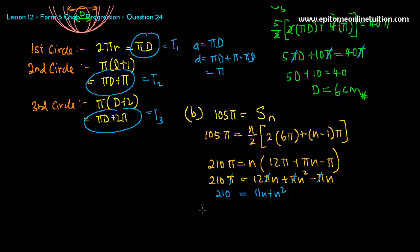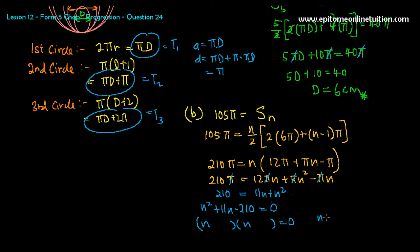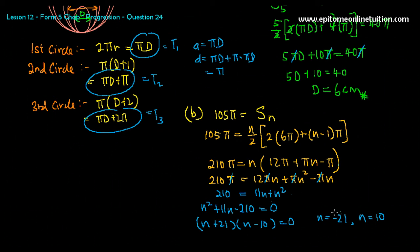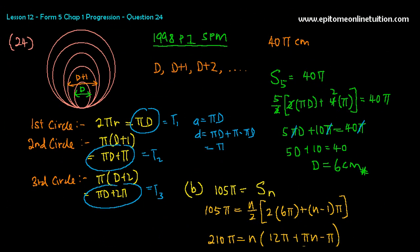This is a quadratic equation. Rearranging: N² + 11N − 210 = 0. Factorizing gives N equals negative 21 or N equals 10 — that is (N+21)(N−10) = 0. Since a negative number of circles is not acceptable, the answer is N equals 10.